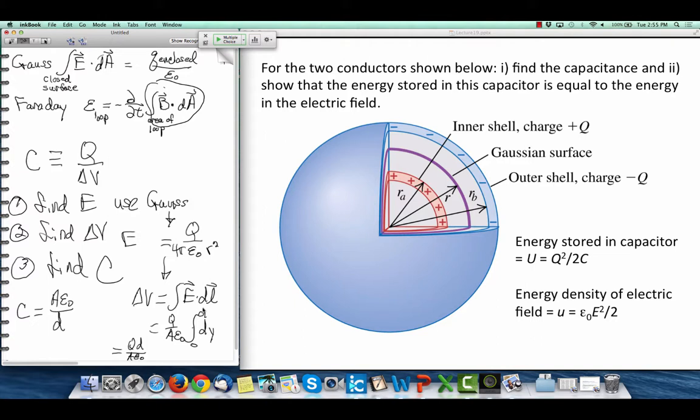So, this is, E dot dL is just going to be, E has a constant q, a constant 4 pi e zero, and a 1 over r squared. And I'm integrating radially, so I'm integrating along dR.